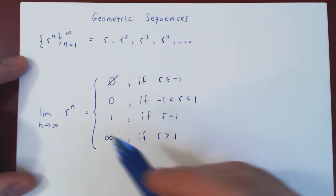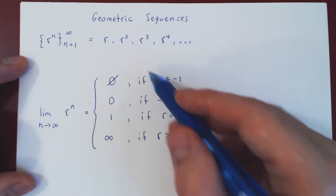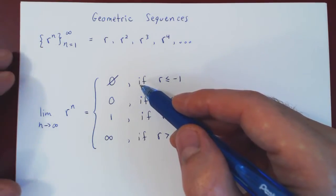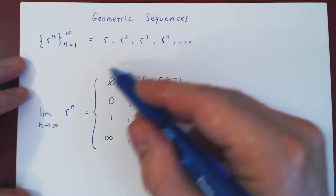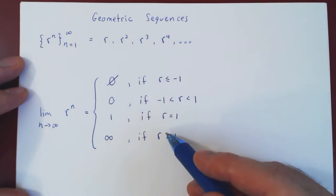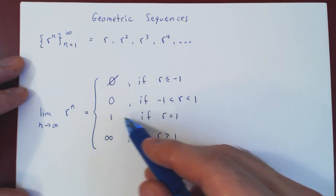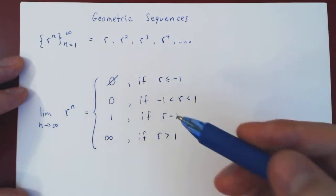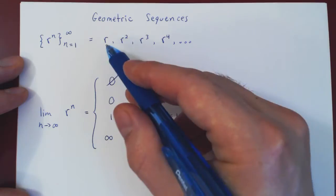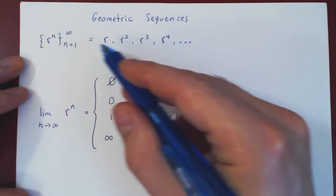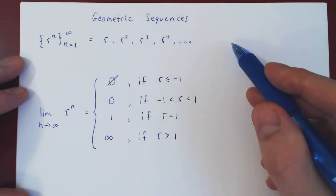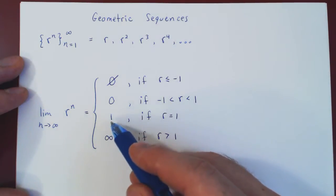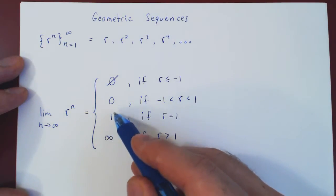Let's look at this from a very intuitive point of view and see that this is very natural. We've already dealt with the case when r is exactly equal to 1. As we've just said, 1 to any power is always 1, and the sequence is just constant and always equals 1. Therefore, it obviously converges to 1.